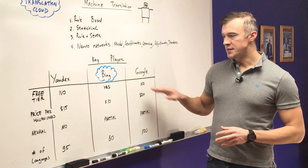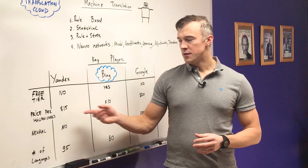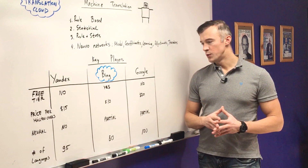Looking at the pricing table, the price per million characters is $15 on Yandex, $10 on Bing, and $20 on Google.